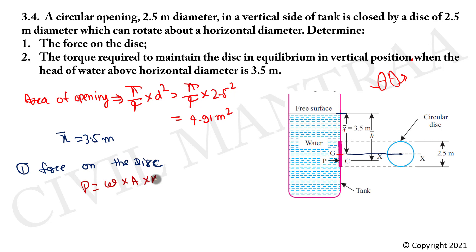Now for the force on the disk, it's specific weight multiply by area multiply by depth of CG. Force equals 9.81 kN per m³ multiply by area 4.91 multiply by x-bar 3.5, which equals 168.6 kN.